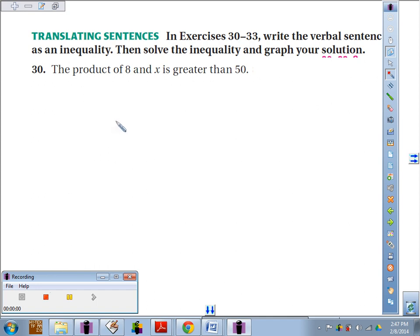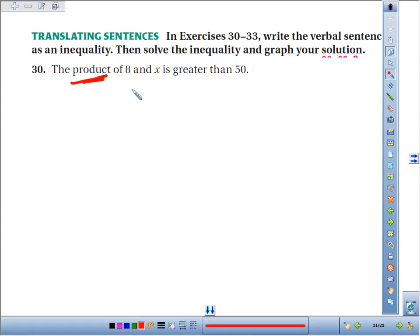Number 30, we're going to write the verbal sentence as an inequality and then solve it and graph it. The product of 8 and x—product is just multiplication—so we're multiplying 8 and x is greater than 50. So we've translated it.